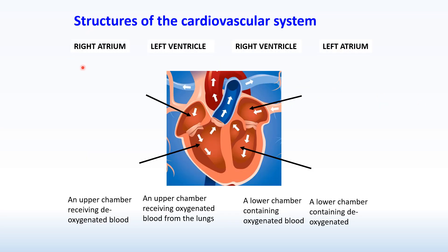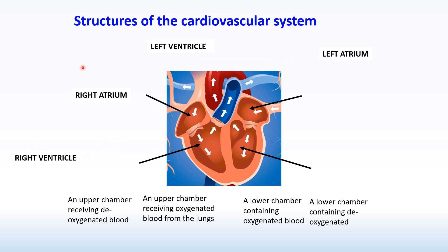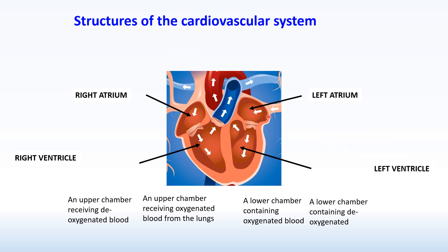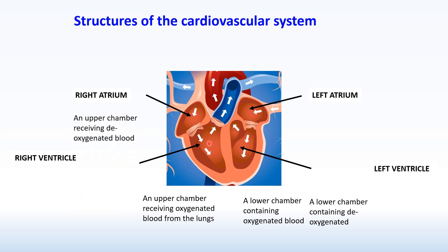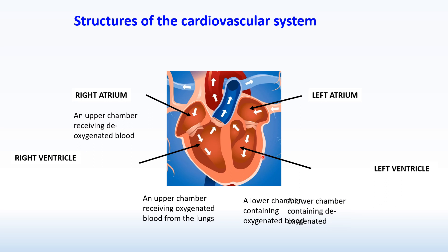So now we're on to the structure of the heart. We need to know these components because you may get asked to identify a chamber in the exam. The top two chambers are the right and left atrium. Now how we see it, the right-hand side is on the left of the diagram and the left is on the right — it is shown from within. The bottom two chambers are the ventricles, the right and left.